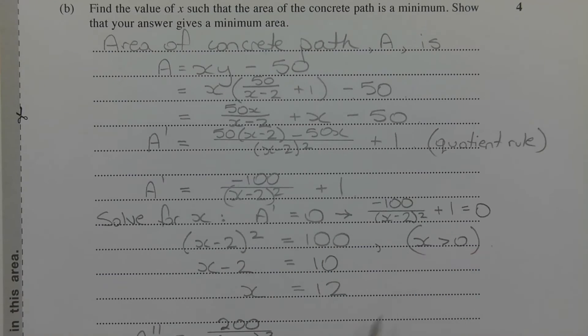Note that x must be positive because it represents the length of a rectangle. Taking the square root of both sides, notice that I've only taken the positive square root. We have x minus 2 is equal to 10. And then adding 2 to both sides of the equation, we get x is equal to 12. And that corresponds to a stationary point.